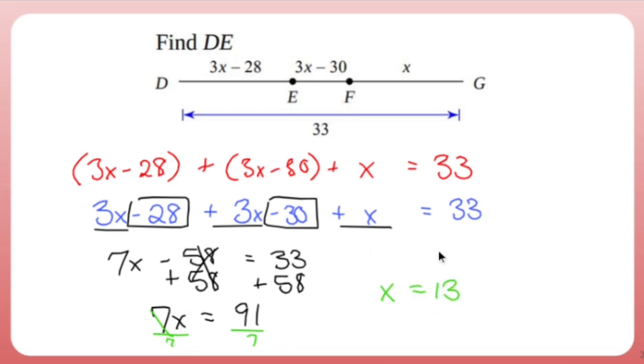Now before I circle that and be done, I'm not. It didn't ask me to find x. It asked me to find DE. But the only way that I could find DE is by finding x and now plugging it into that expression. So DE is 3 times x, 3 times 13, minus 28. 3 times 13 is 39, and 39 minus 28 is 11. So DE is 11. No units to worry about. No centimeters, no inches. Just 11. We found it.